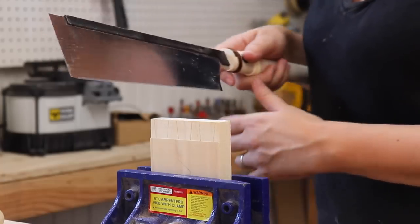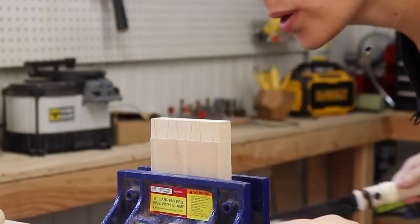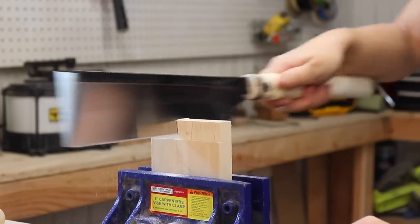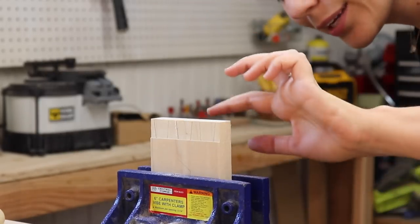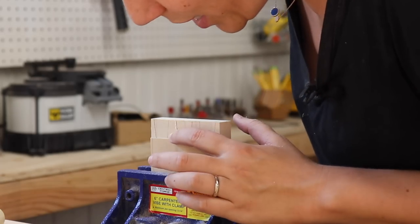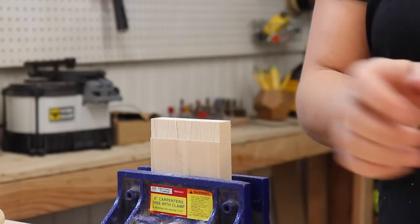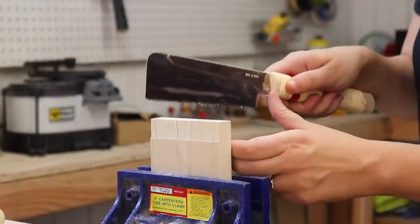Here goes nothing. Totally on my line in the front, but not on my line in the back. So something's a little wonky there. I'm going to try the smaller saw. Maybe I'll have more control.